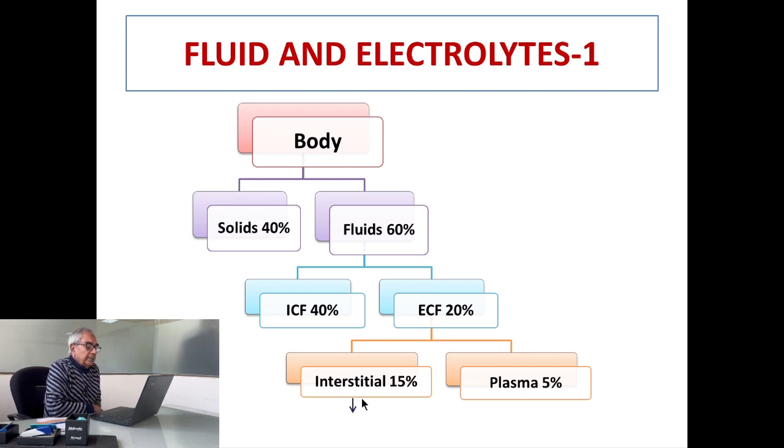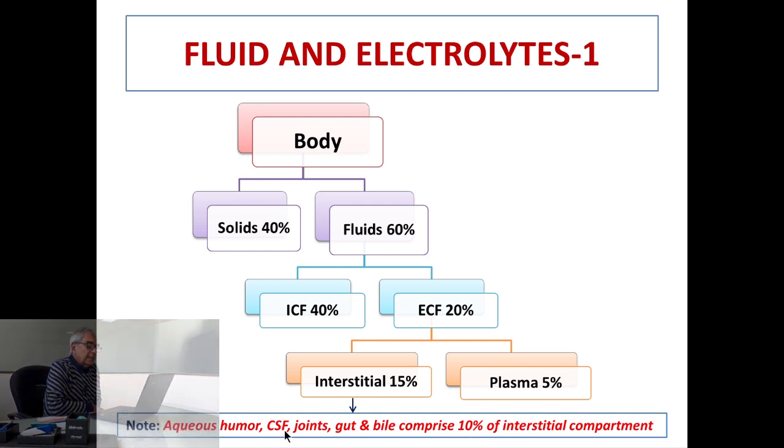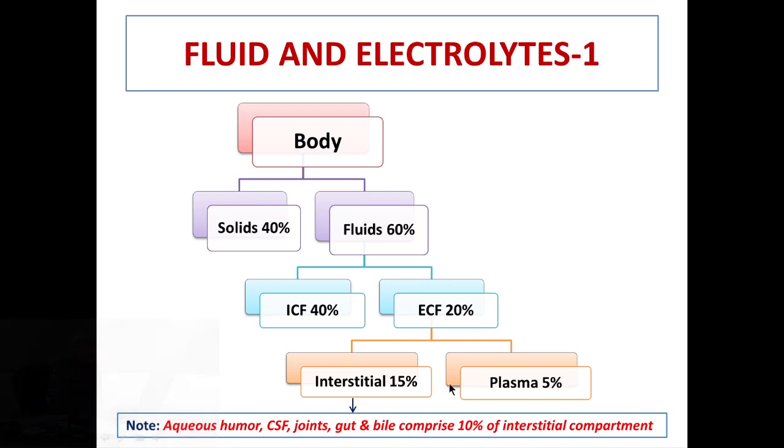Out of this 15 percent interstitial fluid, about 10 percent comprises aqueous humor, CSF, joints, gut and bile. Now functionally all these compartments are contiguous with each other and they are in dynamic equilibrium with each other.